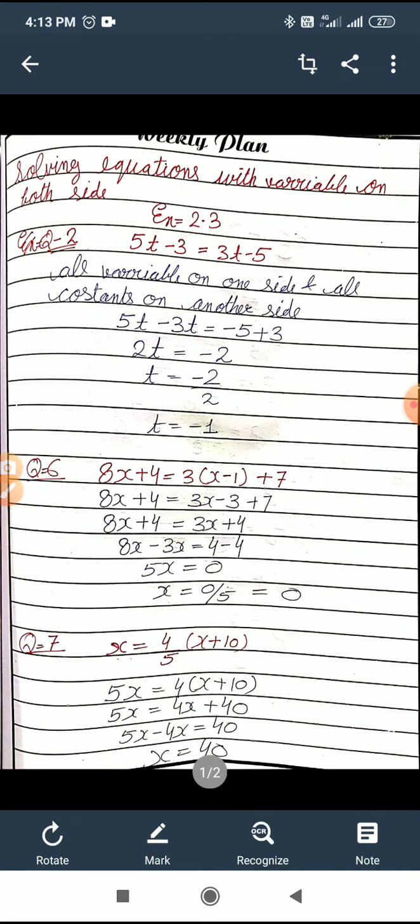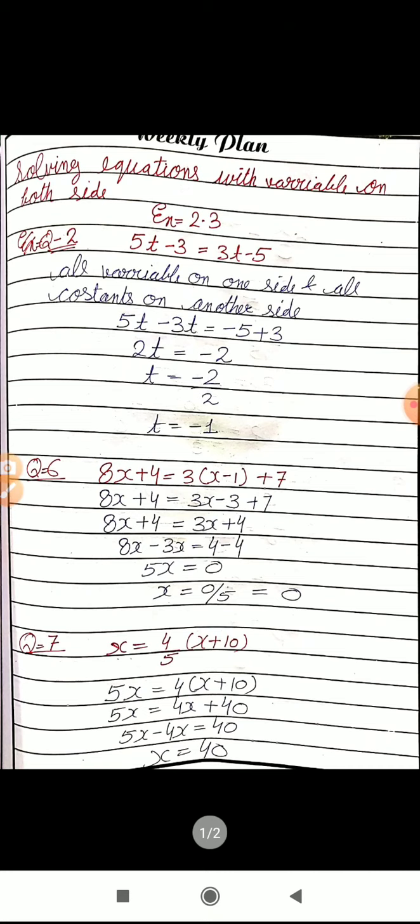5t minus 3t is 2t, and minus 5 plus 3 is minus 2. Look, the rule of integers will always be applicable. What are the rules? Same sign are added, sign remains same, and different sign will be subtracted with sign of larger numerical value. So minus 5 and plus 3, different sign - that's why they are subtracted. Answer is 2. Larger numerical value is 5, so the sign is minus. So minus 2.